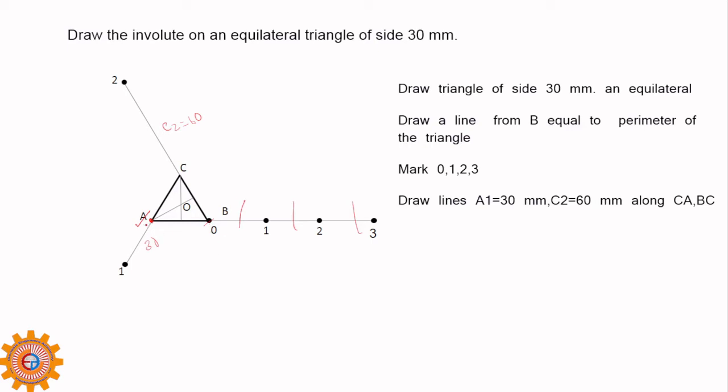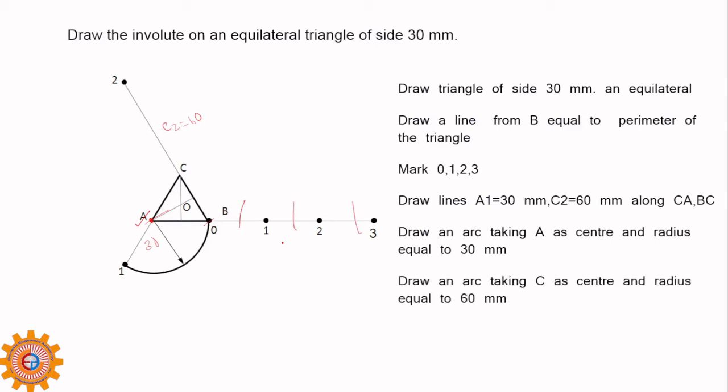Your journey starts from 0. Taking A as center, you have to draw one arc covering 0 and through 1. Draw an arc taking A as center. Next is C as center. We move clockwise: A, C, B.